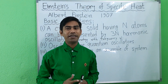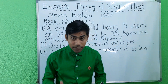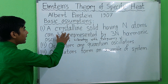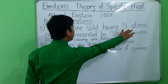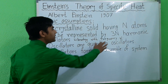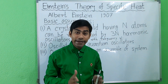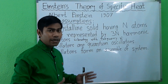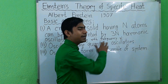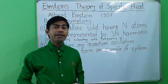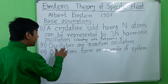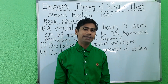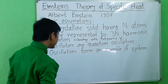The basic assumptions of Einstein's theory are: first, a crystalline solid having N atoms can be represented by 3N one-dimensional, identical, and independent harmonic oscillators, each vibrating with the same frequency ν. The second assumption is that the oscillators are quantum oscillators having discrete energies.